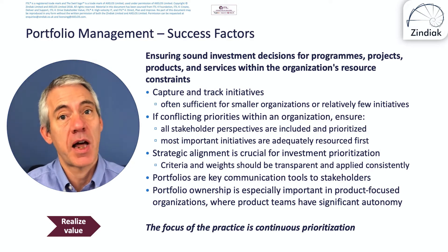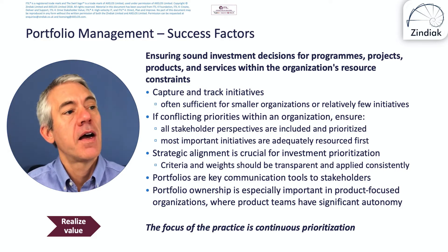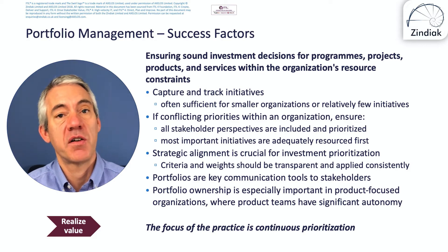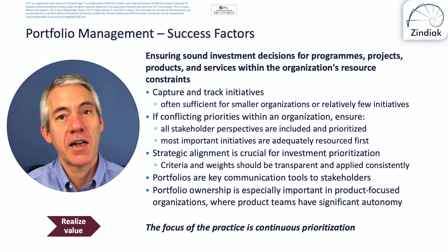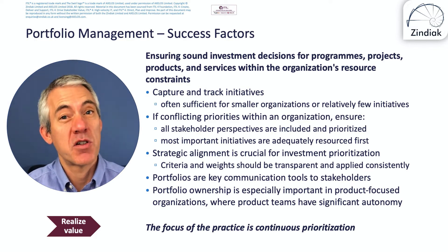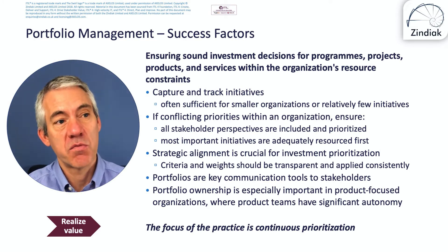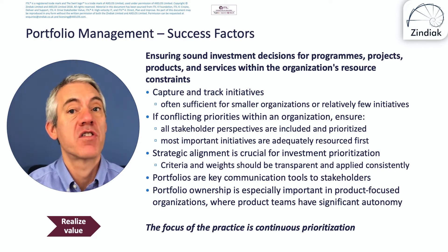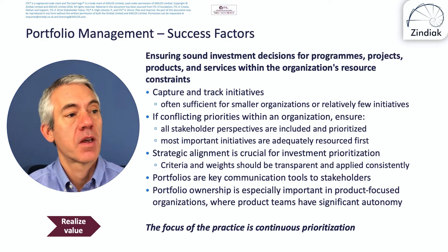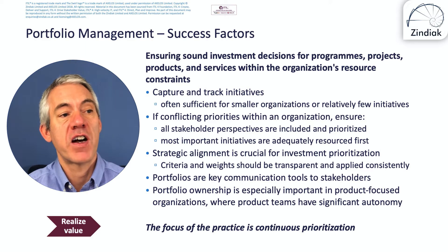Where there are conflicting priorities within an organization, ensure that all stakeholder perspectives are included and prioritized, and that the most important initiatives are adequately resourced first. That's very much in line with agile delivery — having a product backlog and prioritizing using MoSCoW. The must-haves are our most important initiatives, and we prioritize and resource those first, then ask what should-haves and could-haves we can also do.